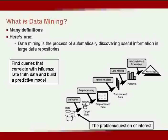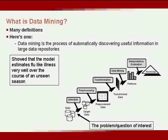At that point, we started running our data mining model, which is similar to a linear regression model, to find queries that correlated with our ILI rate truth data. We then showed that the model can estimate flu-like illness very well over the course of an unseen season. This is a fairly standard data mining process, but I wanted to illustrate that some of the important steps happened well before the data mining step itself, where we used correlative methods to identify flu-related queries.